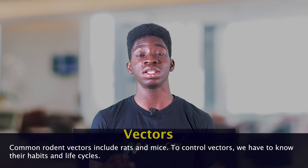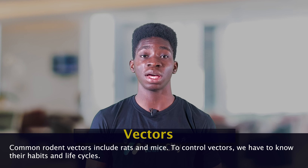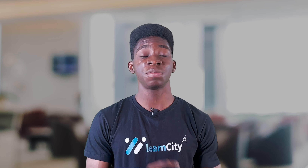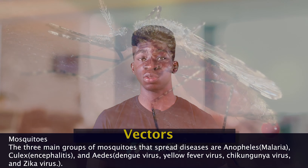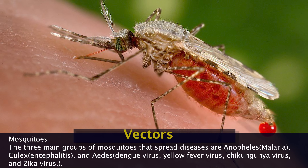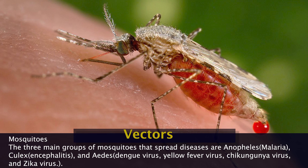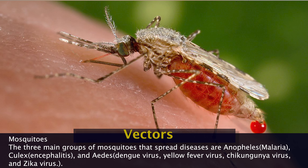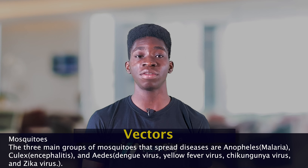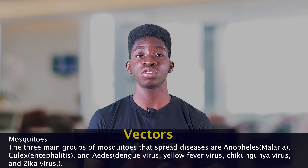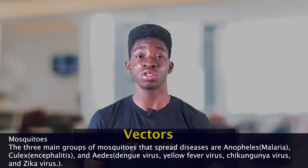We're going to start with a very important insect vector: mosquitoes. There are three main groups of mosquitoes that spread diseases — the Anopheles mosquito, the Culex mosquito, and the Aedes mosquito. The Anopheles mosquito spreads malaria, the Culex mosquito spreads encephalitis, and the Aedes mosquito spreads dengue fever, yellow fever, Zika virus, and so on.